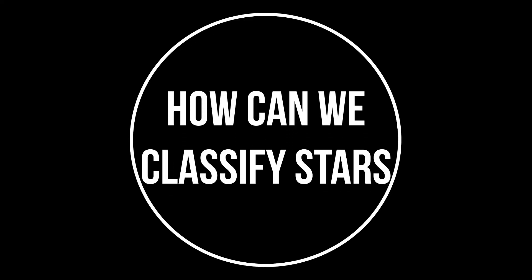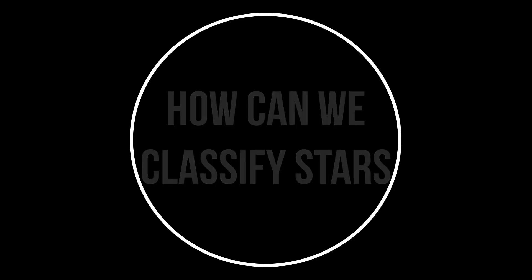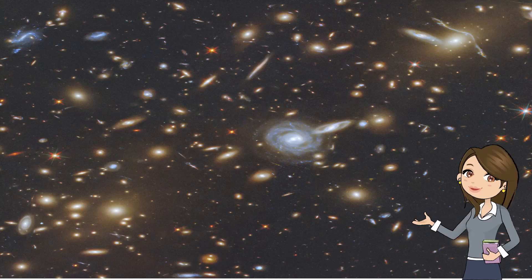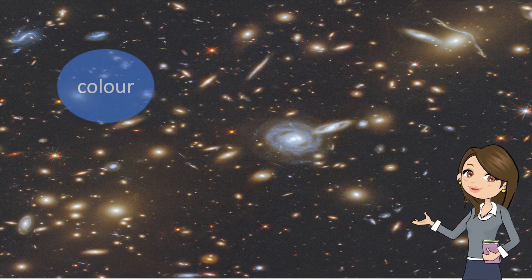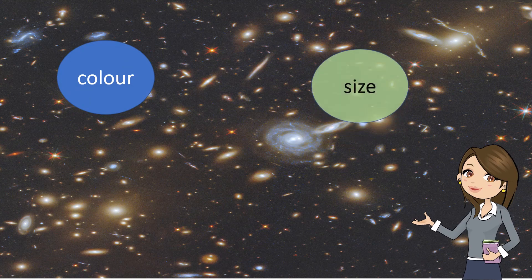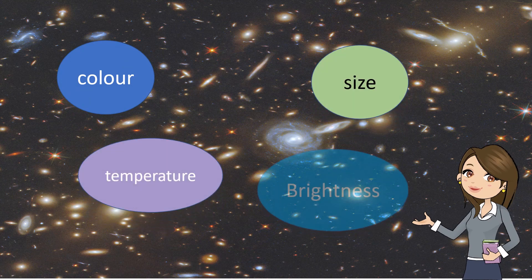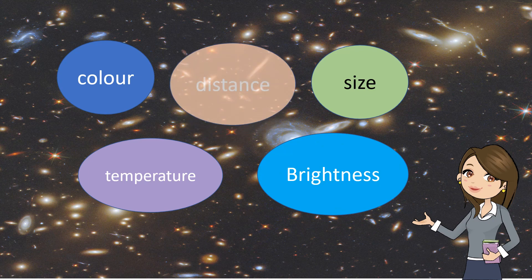Different types of stars are born and die in the universe. How can we classify the stars? Stars are classified based on color, size, temperature, brightness and its distance from the earth.